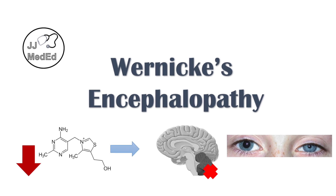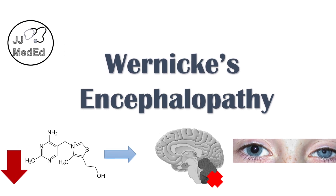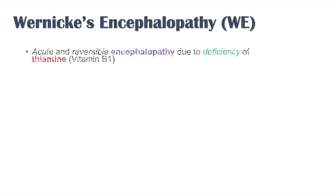Hey everyone, this lesson is on Wernicke's encephalopathy. We're going to talk about what this condition is, why it happens, and how we can actually make the diagnosis and treat it. Wernicke's encephalopathy is an acute and reversible encephalopathy due to a deficiency of vitamin B1, or thiamine.